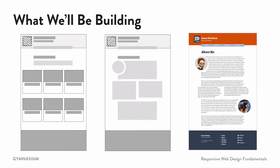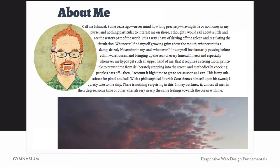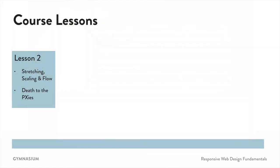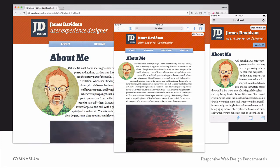What we'll be building: we're going to make a portfolio site with things like a homepage, a main portfolio page, a page about you, and a few other bits and pieces. We've got examples from wireframes to design comps, all the way through lots of sample code. In lesson two, we'll look at stretching and scaling and the flow of your layout, going from a basic wireframe and adding image and text elements and web fonts. In lesson three, we'll look at columns, Flexbox, responsive typography, and the future of layout on the web, making sure that type scales and layouts reflow to work perfectly on every device.